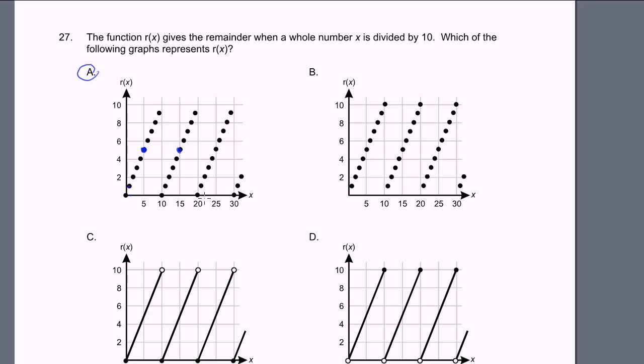If you take 20 divided by 10, the remainder is 0. If you take 30 divided by 10, the remainder is 0. If you take 29 divided by 10, the remainder is 9. It's right there. 19 divided by 10, the remainder is 9. 9 divided by 10, the remainder is 9. This one looks pretty good. Let's see what the other ones do.